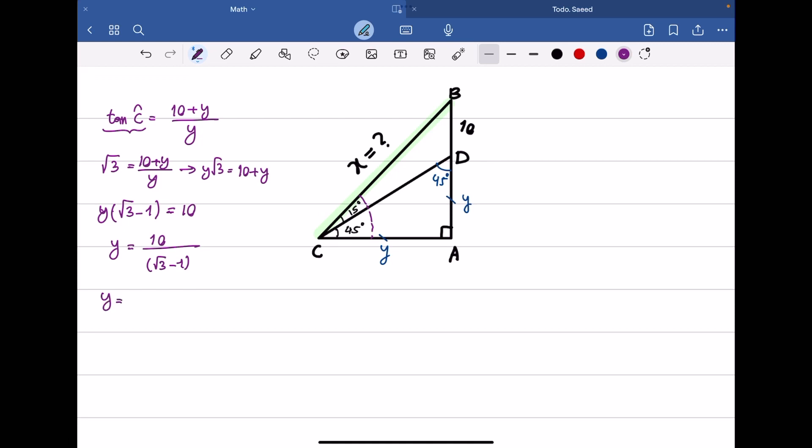We can further simplify by rationalizing: multiply both numerator and denominator by (square root of 3 plus 1).